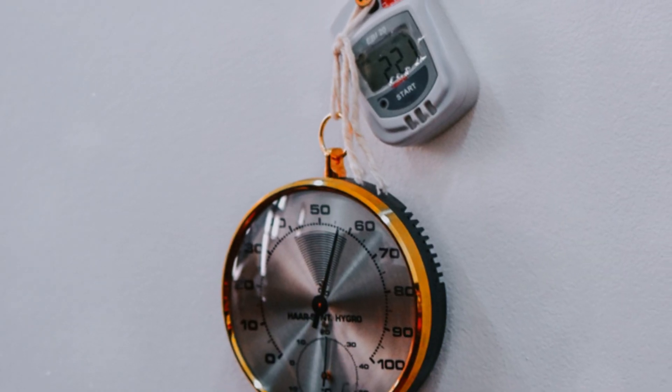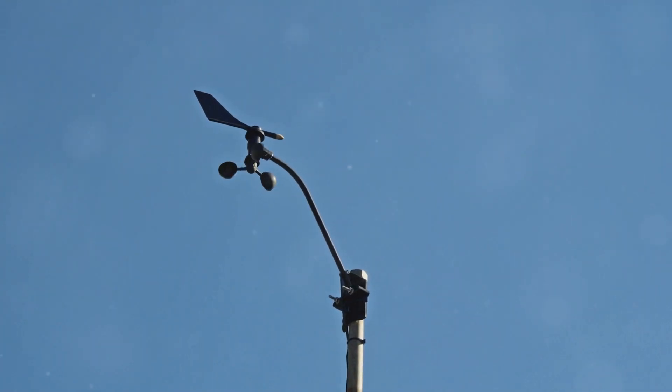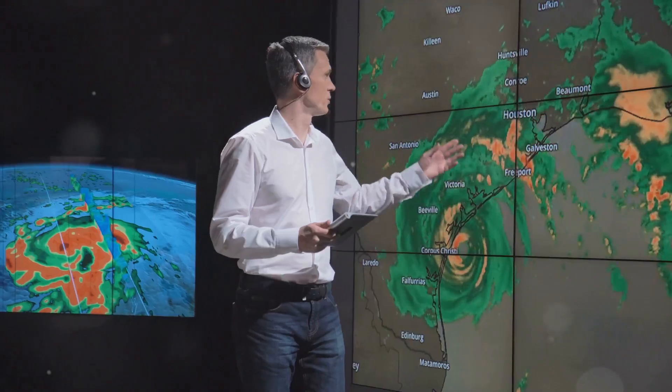If the hygrometer shows high humidity, it could mean rain is on the way. The anemometer tells us if the wind is getting stronger, helping predict changes in weather patterns. By using the information from all these tools, meteorologists can create weather forecasts and help people stay safe and prepared.